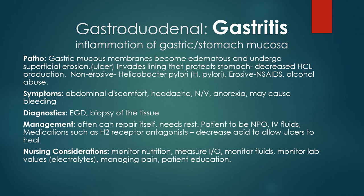Clinical manifestations of acute gastritis include dyspepsia, anorexia, hiccups, nausea, and vomiting, and this can last for a few hours to a few days. In erosive gastritis we may see bleeding — the client may be vomiting blood, or have melena, or hematochezia, which is bright red bloody stools. The client with chronic gastritis may complain of pyrosis after eating, belching, a sour taste in their mouth, halitosis, early satiety, anorexia, and nausea and vomiting.